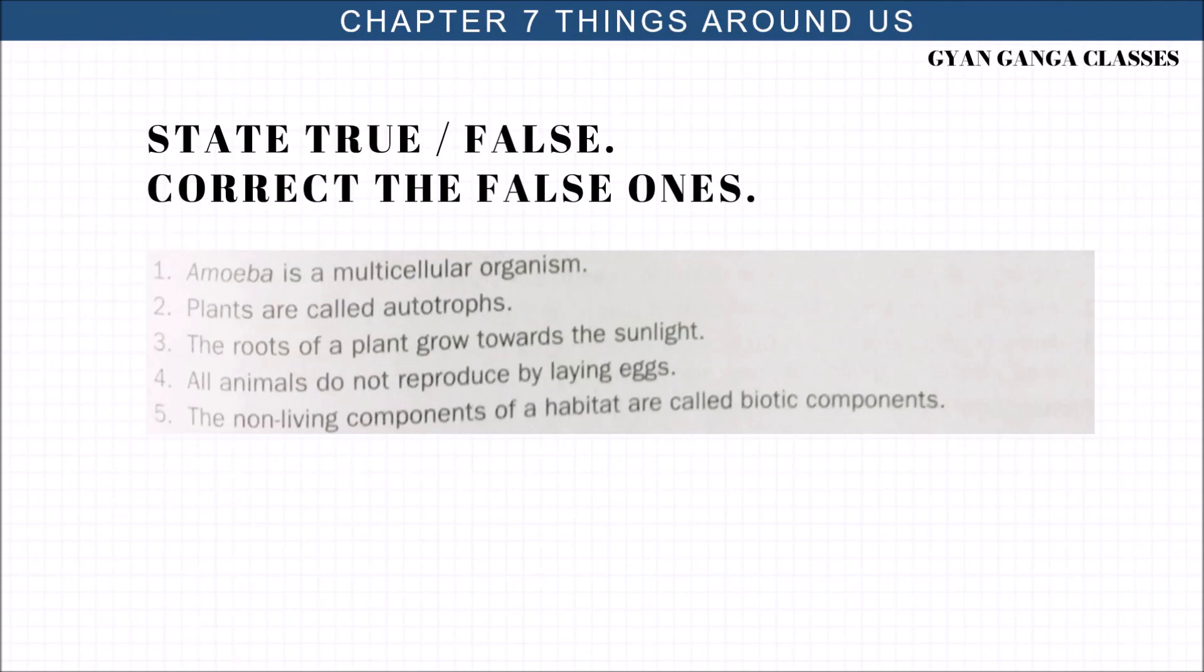State true and false and correct the false ones. Amoeba is a multicellular organism. Is it correct? No, it is false. Amoeba is a unicellular organism. Plants are autotrophs. Is it correct? Yes, it is true. Roots of a plant grow towards sunlight. Is it true? No, false. They grow towards gravity. Root of plant grow towards gravity is the correct statement.